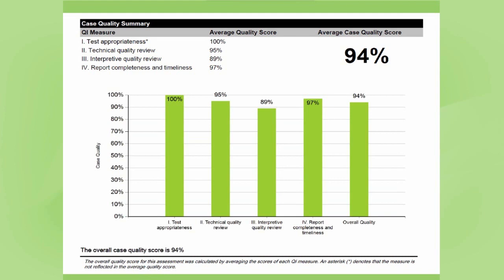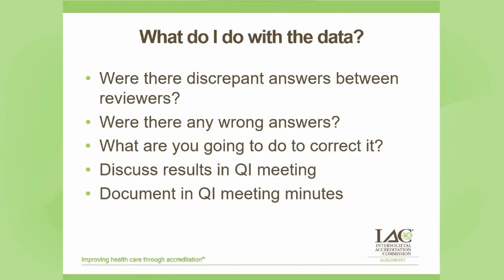This summary report is what you are going to discuss at your QI meeting. We do have templates for the QI meeting minutes, which can be found under the sample documents on our website. Your QI meeting minutes will include what you found for each measure — you should mention how many studies were reviewed and what was found, and not just put that there was 100% agreement if that's what you found. You will discuss these results in your QI meeting and document them in the QI meeting minutes.